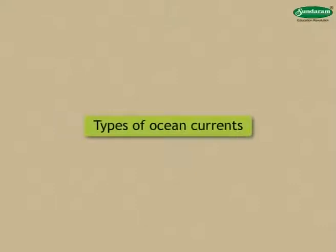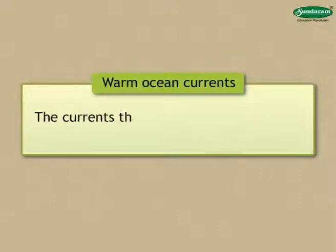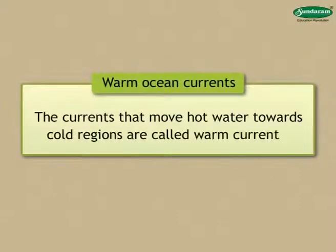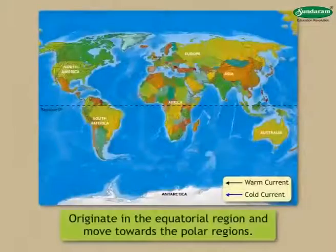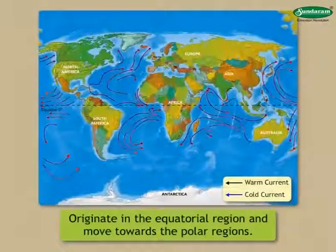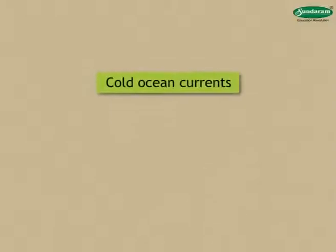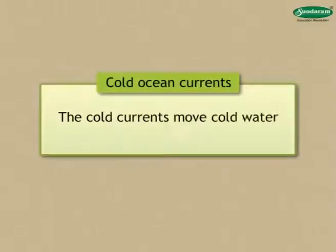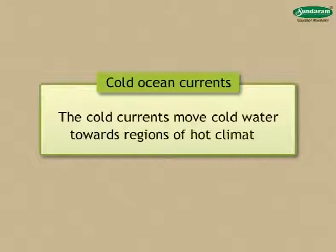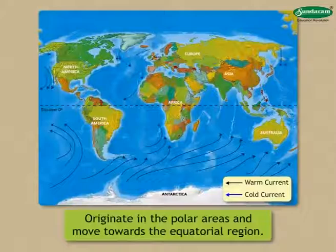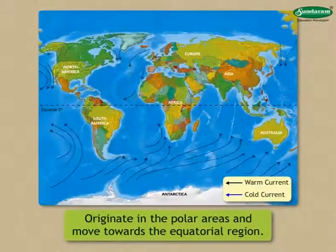The first type is warm ocean currents. The currents that move hot water towards cold regions are called warm currents. Generally, they originate in the equatorial region and move towards the polar regions. The second type is cold ocean currents. Cold currents move cold water towards regions of hot climate. Generally, they originate in the polar areas and move towards the equatorial region.